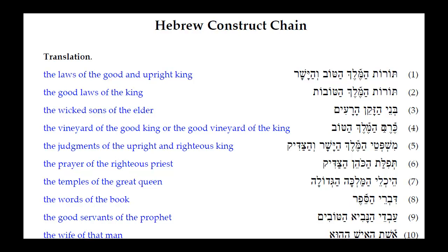Number four: Kerem HaMelek HaTov. The adjective HaTov is masculine singular and can agree with HaMelek, which is masculine singular, or with Kerem, which is also masculine singular — the vineyard. So it could say 'the vineyard of the good king' or 'the good vineyard of the king.' Either way would be grammatically possible, and it just depends on context.